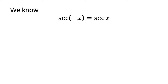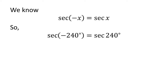As we know, the trigonometry identity secant of minus x is equal to secant of x. The video explaining how to derive this identity is appearing in the upper right corner, and the URL address has been mentioned in the description section. Let us apply the above identity for secant of minus 240 degrees. Here x is 240 degrees, so secant of minus 240 degrees is equal to secant of 240 degrees.